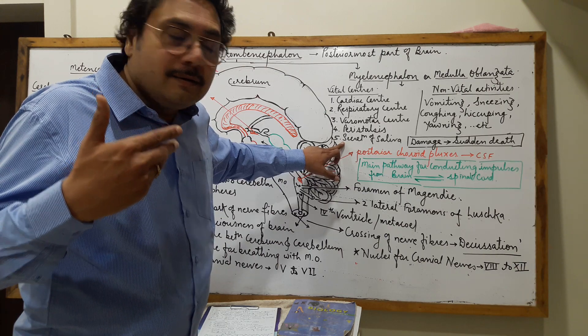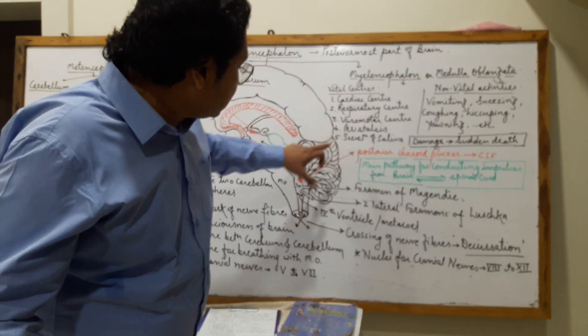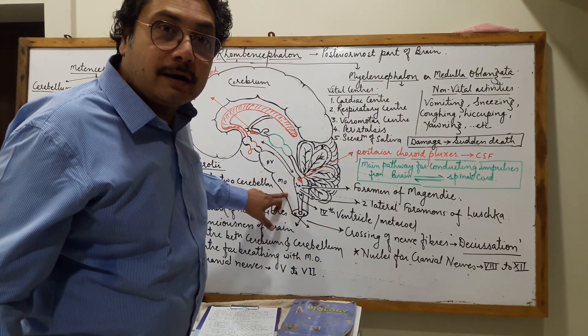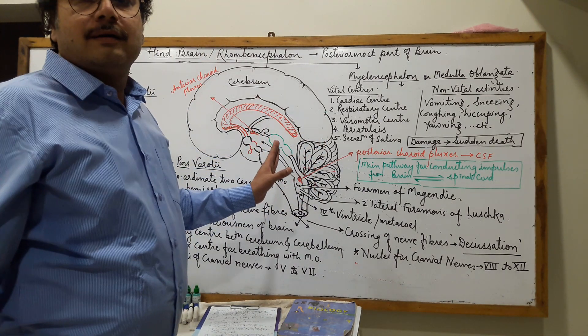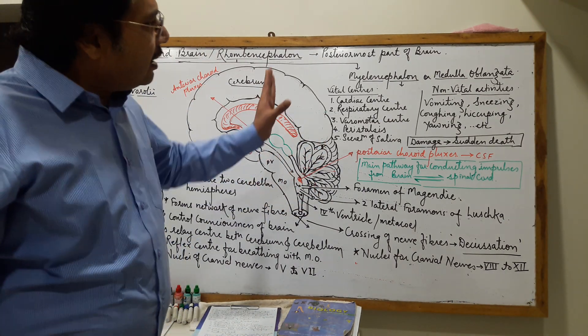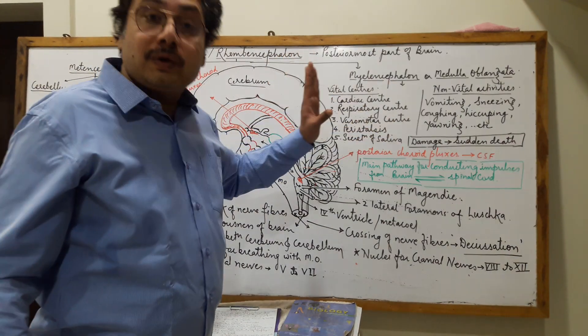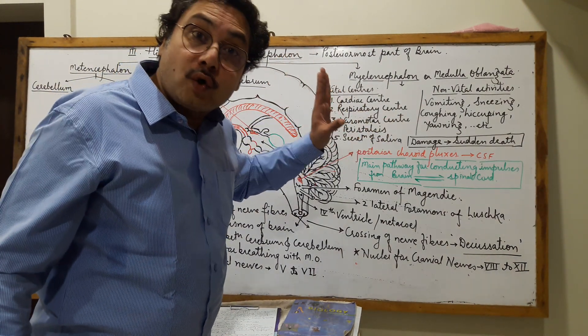Regular secretion. All these vital centers are located in the medulla oblongata, controlling such vital activities. Along with such essential activities, there are some non-vital centers also there, controlling such non-vital activities.